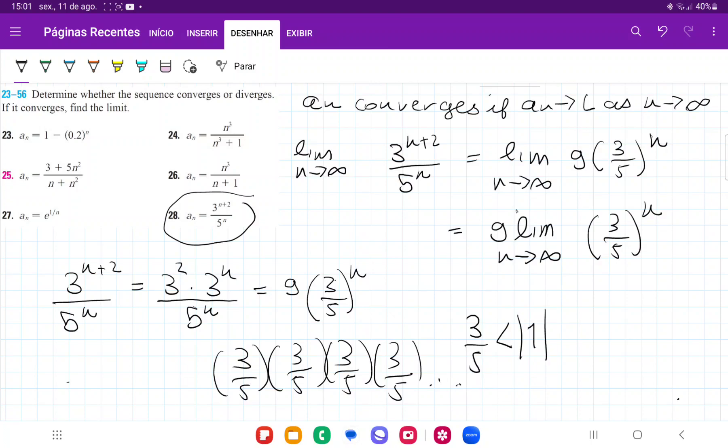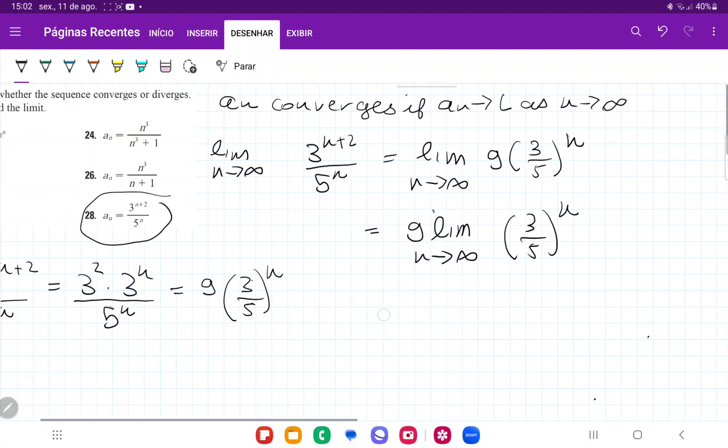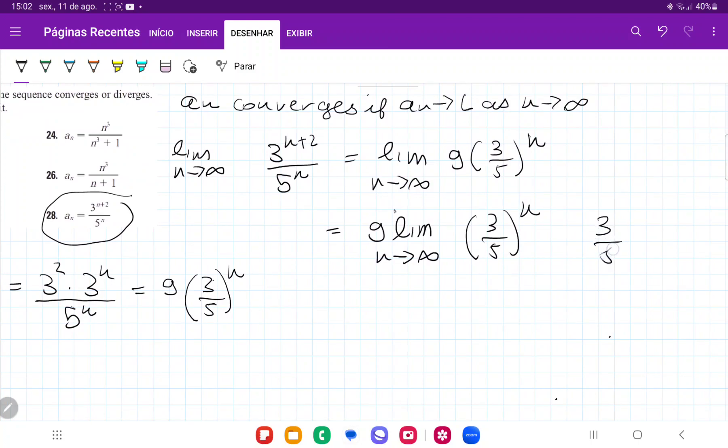And so, because this ratio here is less than 1, we can say that if we elevate it to infinity, this limit is going to tend to 0. So, we say that 3/5 is less than 1, so the limit as n approaches infinity of (3/5)^n is equal to 0.